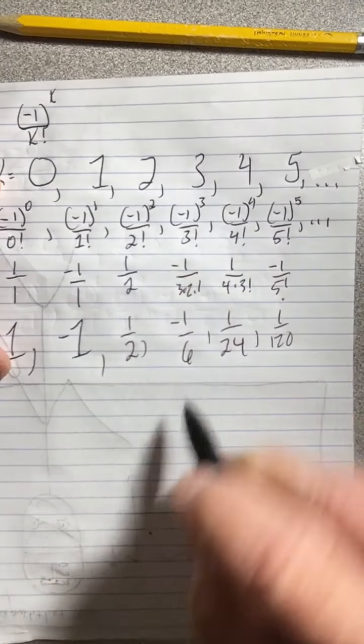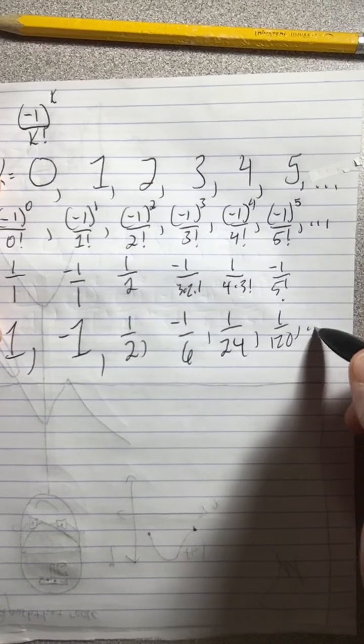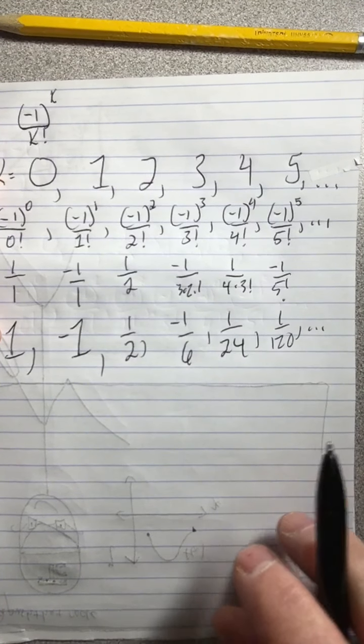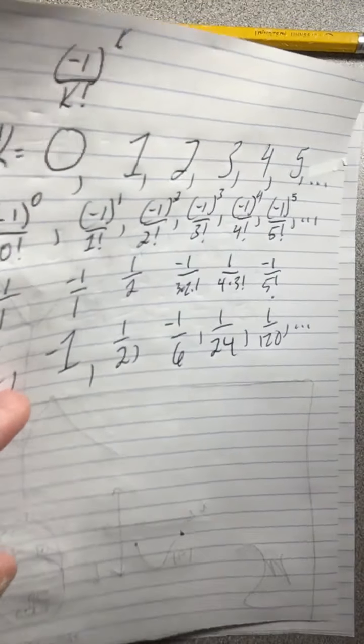Now remember, what we're trying to do with these terms of the sequence that go on and on and on forever is add them up. So we're going to do that next.